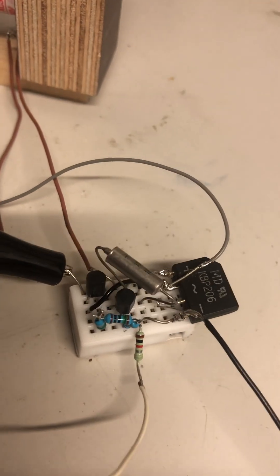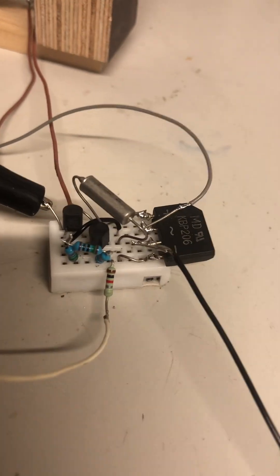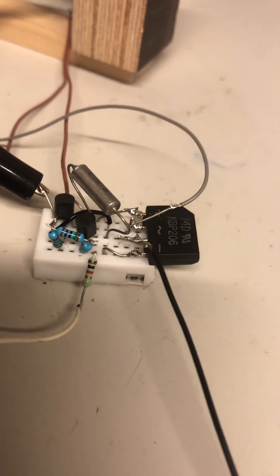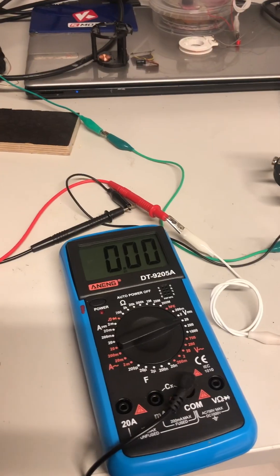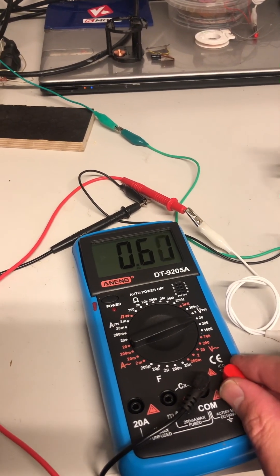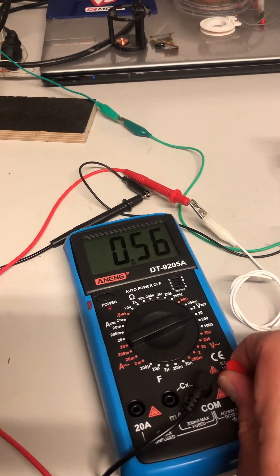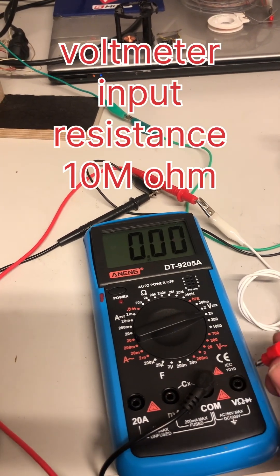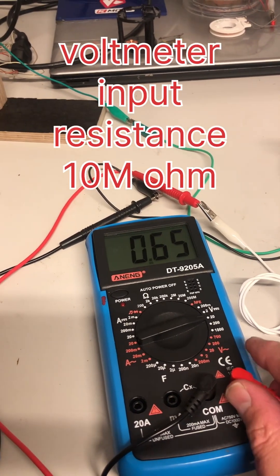So I have 10 microfarad capacitor, low discharge. Voltmeter is producing 0.1 microamp discharge current. Its internal resistance is 10 mega ohm input resistance.